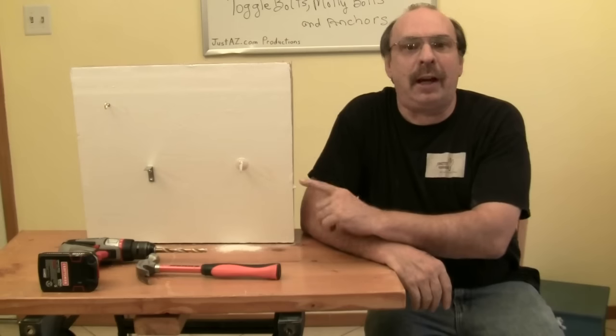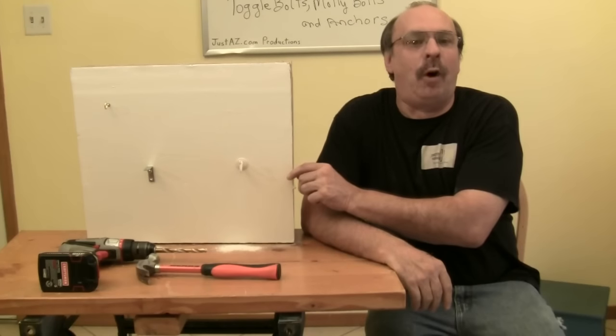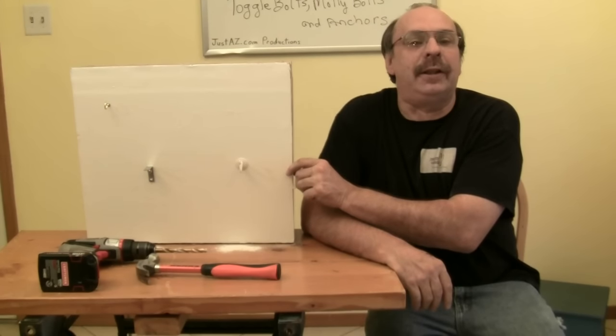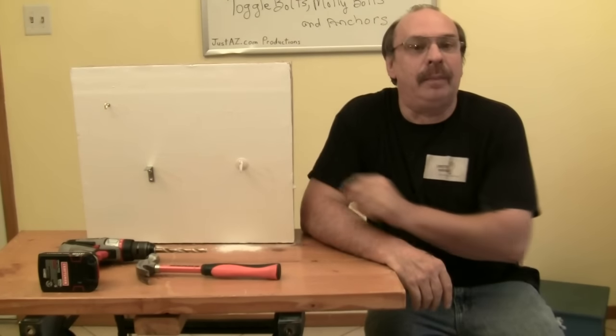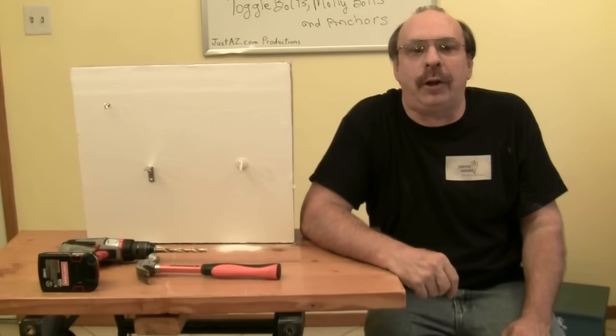If you're using a toggle bolt or molly bolt, make sure the length of the bolt is longer than the thickness of the wall board, which in most cases is about half an inch. And always make sure that your wall board is strong enough to support the anchor.